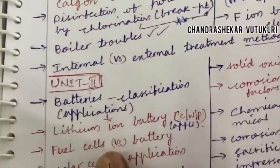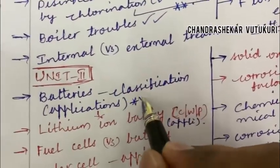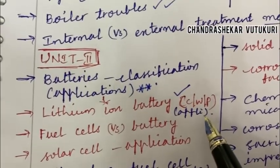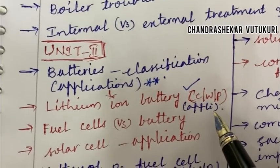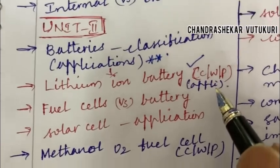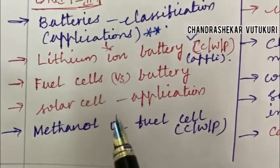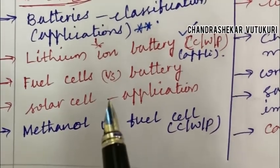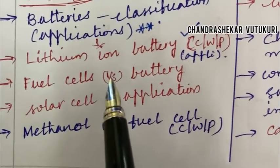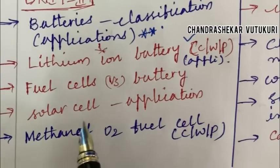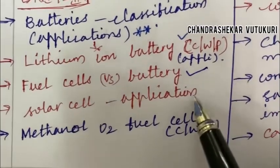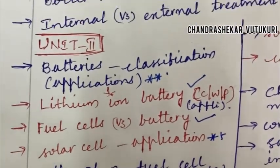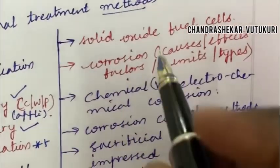Jumping into Unit 2 — it is all about batteries, their classification, and applications, which is said to be a topmost question. Lithium-ion battery construction, working principle, along with applications — you are supposed to work out all drawings only in pencil and label them neatly. You are supposed to work out very neat sketches to score out of full marks. I have uploaded a video on this channel on how to work out a theory paper as well as a mathematical paper to score good marks, which I am going to share in the comment section. Fuel cells versus battery differences, solar cell and its applications, and methanol-oxygen fuel cell construction and working principle are also important. Solid oxide fuel cells is also a topic to note.